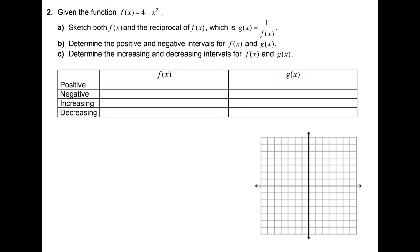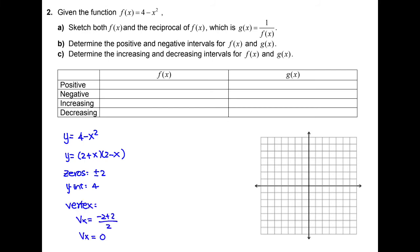Example 2: we are going to graph the reciprocal function of a quadratic relation. First, let's graph the parabola y equals 4 minus x squared. We can factor this as (2 + x)(2 − x), giving zeros at positive and negative 2, and a y-intercept of 4. The x-value of the vertex is found by averaging the two zeros, giving x = 0, and substituting back gives y = 4. So the vertex is at (0, 4).